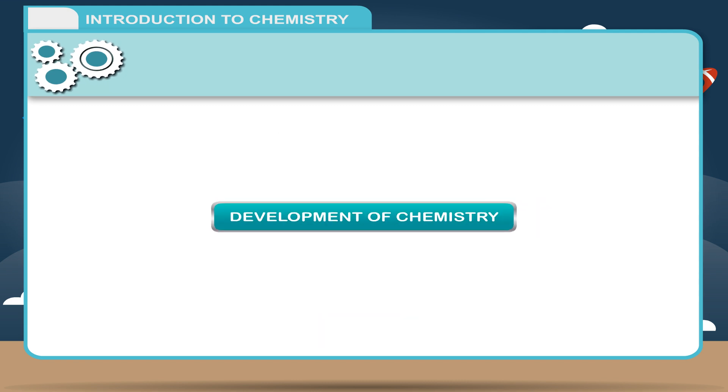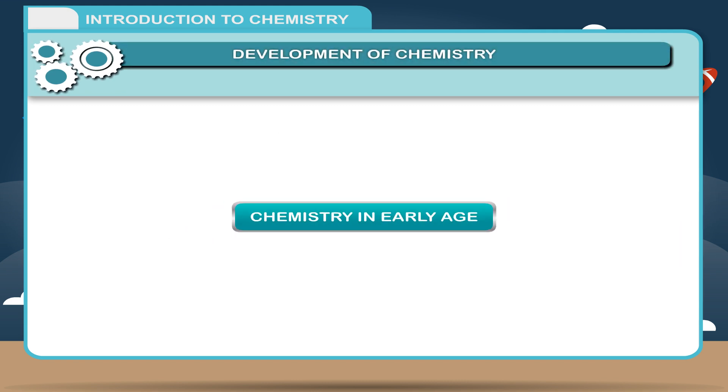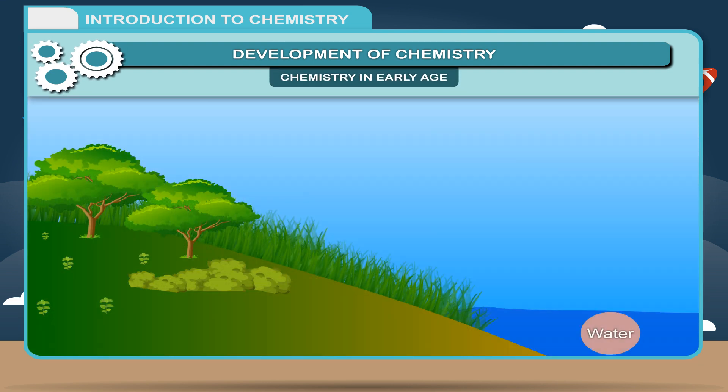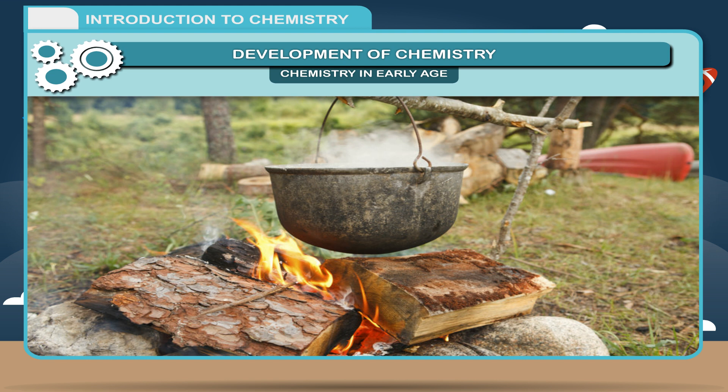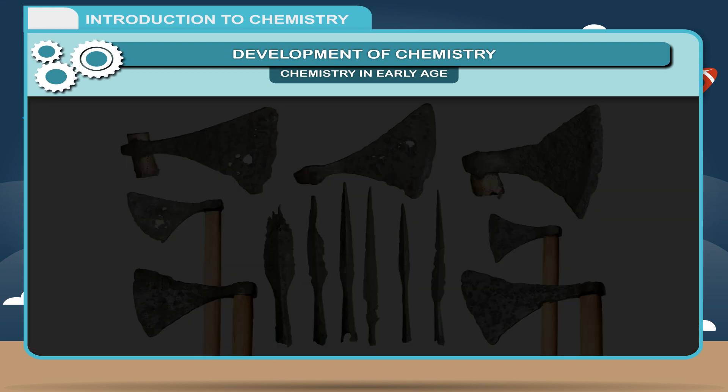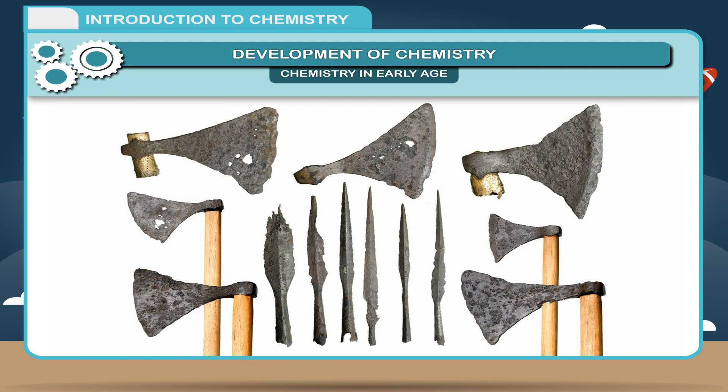Development of Chemistry - Chemistry in early age. Water and air were probably the very first chemicals man used for his existence. With the knowledge of making fire, man's knowledge regarding metals developed. He needed vessels to cook food in and this led to discovery of metals. He also made weapons from metals.